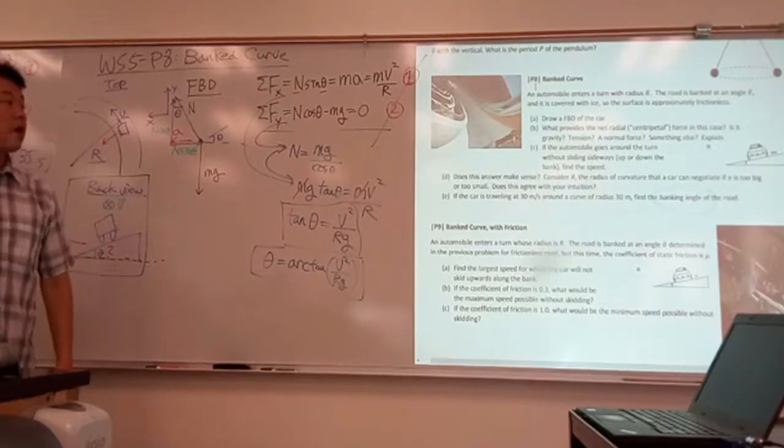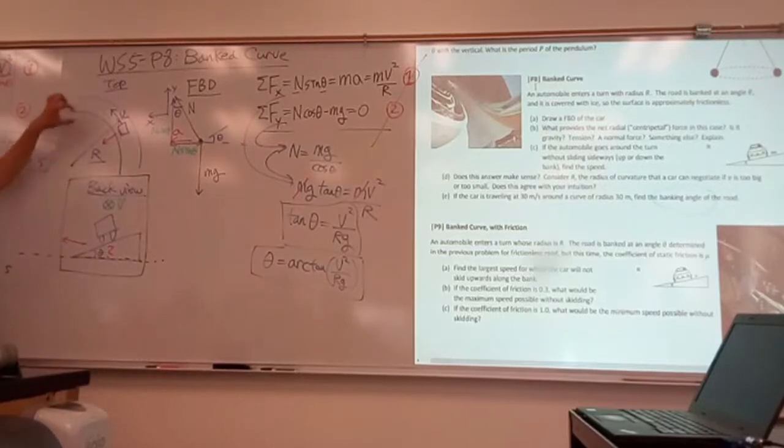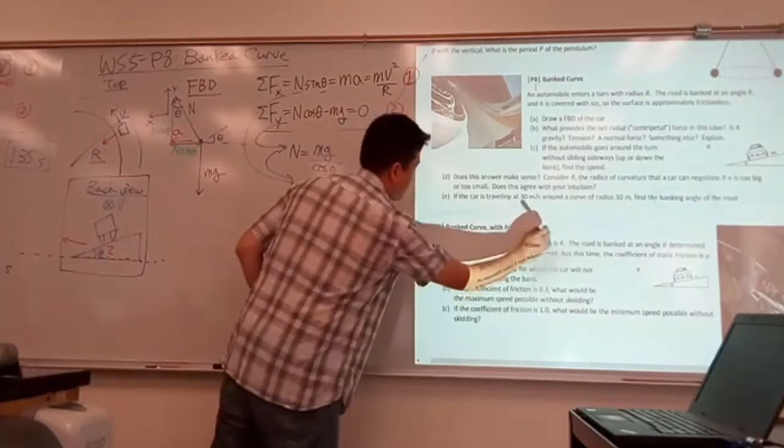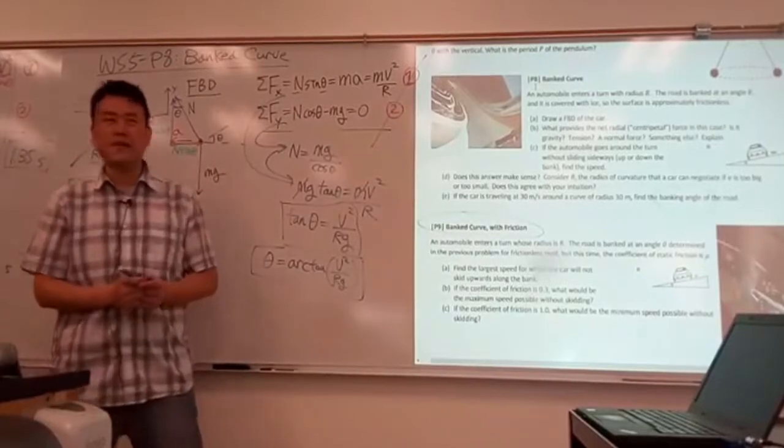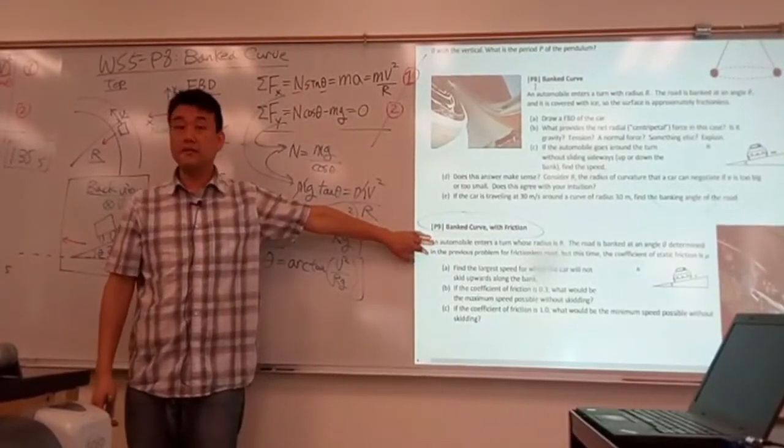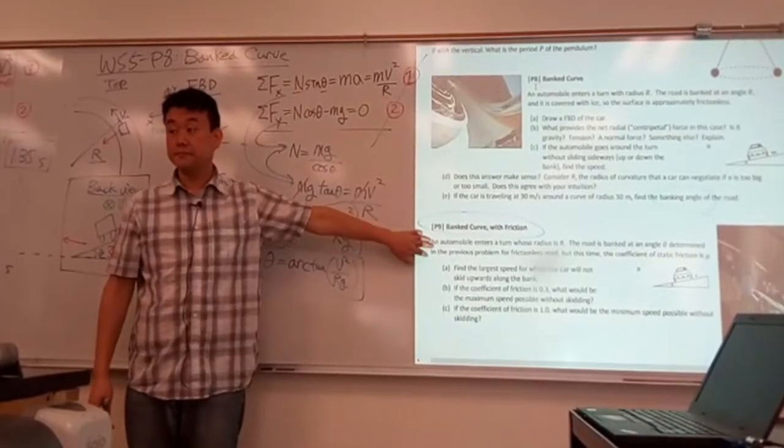So that's it. That's the angle. That's the angle that would allow the cars to make this turn without sliding up or down. And now, this is not a very realistic situation because there's no friction. So for the realistic situation, this is what needs to be done. But let me actually try making a video for this, and I'll just post it on the course website instead of spending class time for this.